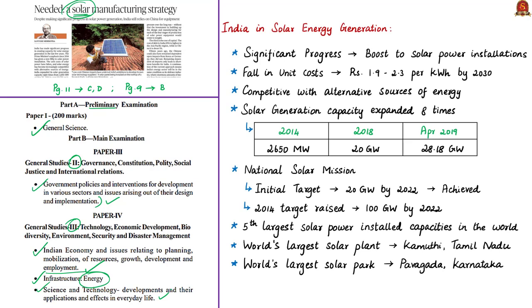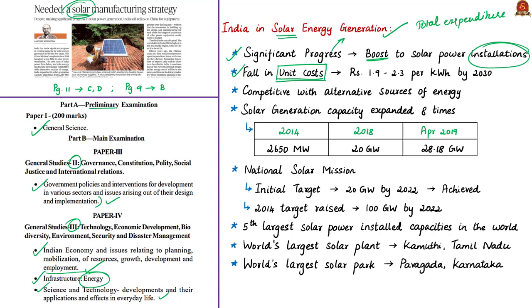In this editorial, the author first talks about solar energy generation in India. He says India has made significant progress in creating capacity for solar energy generation in the last few years, with a boost to solar power installation and a significant fall in unit costs of solar power. Unit cost means the total expenditure incurred by a company to produce, store and sell one unit of a product. According to a joint study by Terry and the Climate Policy Initiative in February, by 2030 the unit cost of solar power will fall to ₹1.9 to ₹2.3 per kilowatt hour. Solar energy has become increasingly competitive with other alternative sources like wind energy.